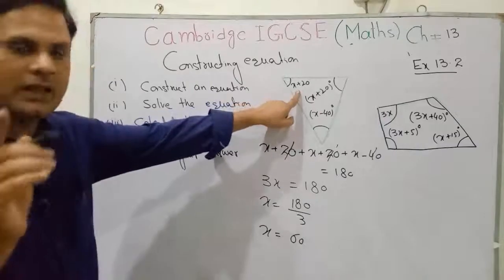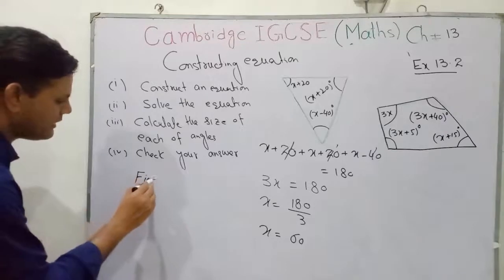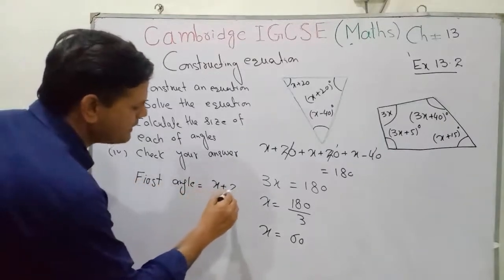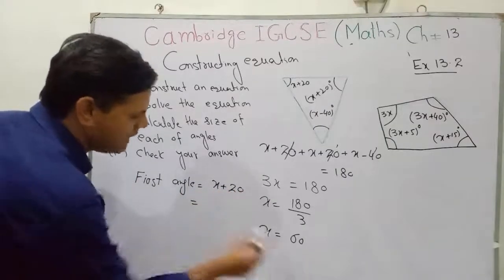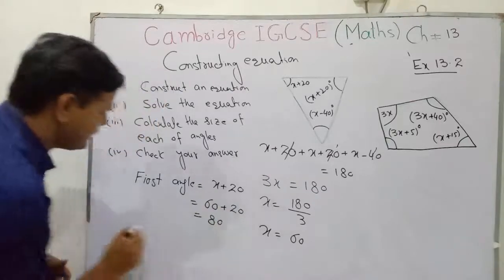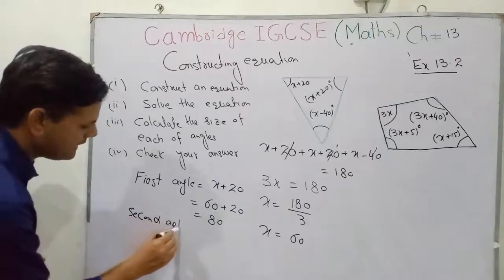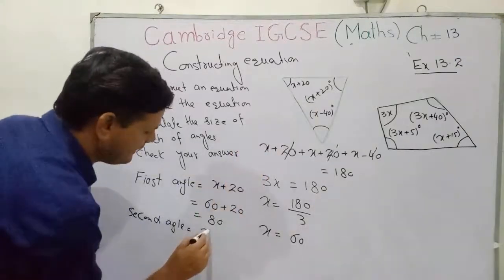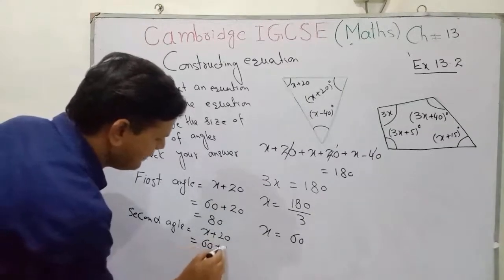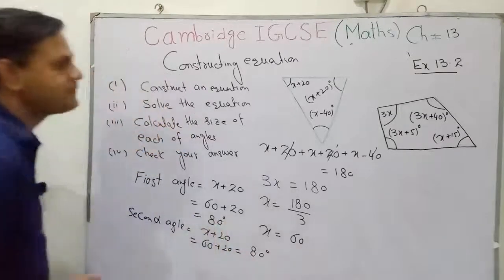To calculate the size of the first angle: first angle = x + 20. Since x = 60, we get 60 + 20 = 80°. The second angle is also x + 20, so putting in x = 60 again: 60 + 20 = 80°.